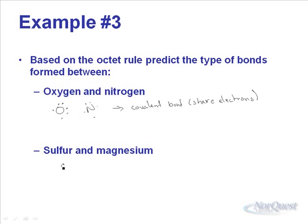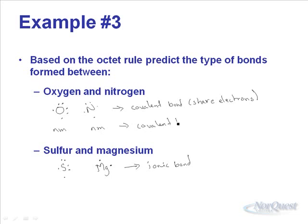Sulfur and magnesium, on the other hand: sulfur is in group 16 so it has six valence electrons, and magnesium is in group 2 so it only has two electrons. Magnesium is more than happy to give them away, so here we're going to form an ionic bond. Another way to look at it: oxygen and nitrogen are both non-metals, so non-metals joined together give covalent bonds, while sulfur and magnesium are a non-metal and a metal, so they form ionic bonds.